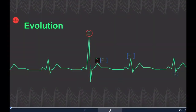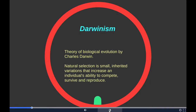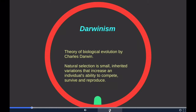Let's take a look at evolution. We start with the father of evolution, Charles Darwin. Darwinism is a theory of biological evolution developed by Darwin — he lived from 1809 to 1882. His theory of evolution stated that all species of organisms arise and develop through the natural selection of small inherited variations that increase the individual's ability to compete, survive, and reproduce.